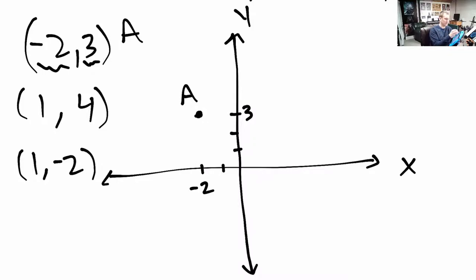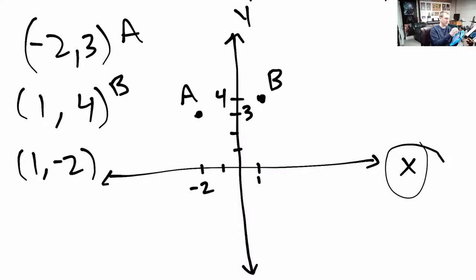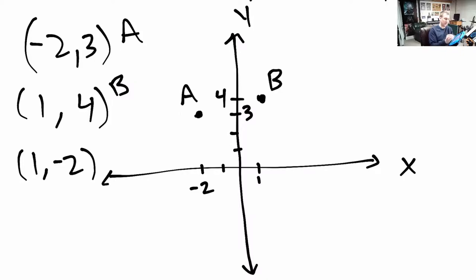Let's graph the next point, which I'll call B. It is one unit to the right of the origin and four units up. So I'm going to draw this point here and label it B — over one and up four. This coordinate pair, this linking of two numbers together, one from the x-axis and one from the y-axis, is represented by plotting a point in that manner. The next one is one, negative two — to the right one and down two. I'll call that one C.